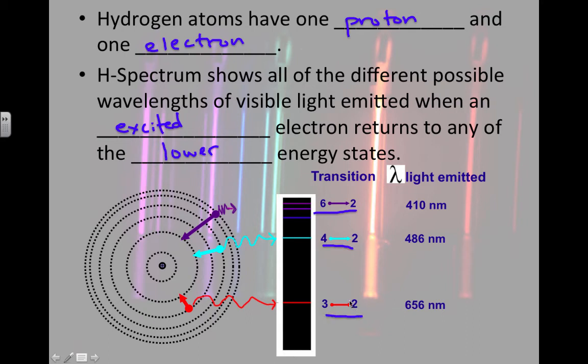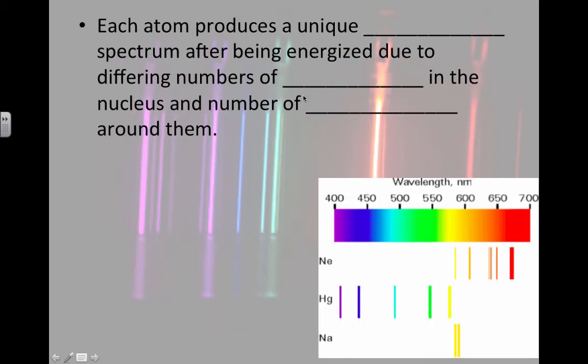It should make sense that more energy is associated with a bigger move. So the bigger the move, the higher the energy. And this doesn't happen only for hydrogen. Each atom produces a unique emission spectrum after being energized due to the differing numbers of protons in the nucleus and the numbers of electrons around them.